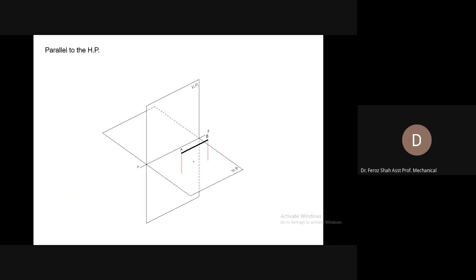As you can see, the line AB is parallel to the horizontal plane because both of its ends are equidistant from the horizontal plane — that is, having the same distance from the horizontal plane. So this line is parallel to the horizontal plane, because if you extend the line to infinity, it will never intersect the horizontal plane.